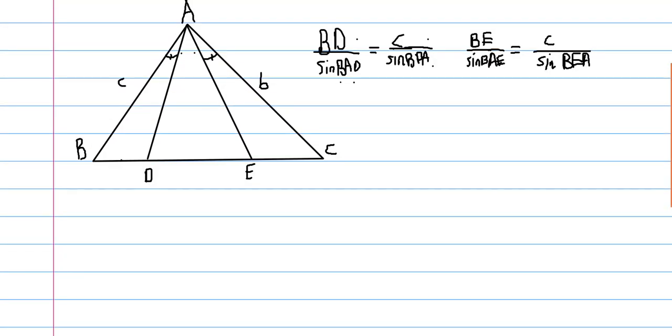And then we have EC, so now we're looking at triangle AEC. EC divided by the sine of CEA is equal to b divided by the sine,